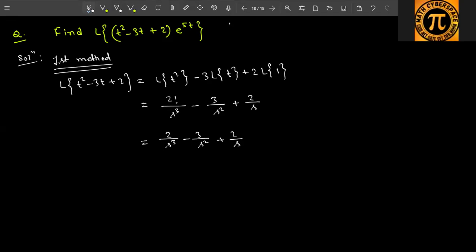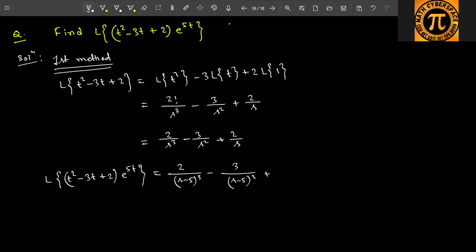Now the answer is not yet complete — you have to apply the first shifting property because e^{5t} is multiplied. So Laplace of (t² − 3t + 2)e^{5t}: by the first shifting property, s is replaced by (s − a), where a = 5. So the answer is 2/(s−5)³ minus 3/(s−5)² plus 2/(s−5). This is the final answer.